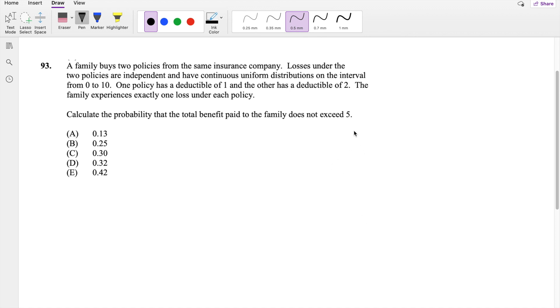So losses under the two policies are independent on 0 to 10. So this is 10 and this is 10. We know the probability distribution function of A and B is equal to 1 over the area. And the area is just a square of 10 times 10, so this is equal to 1 over 100.